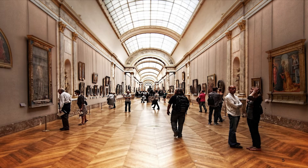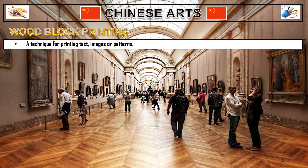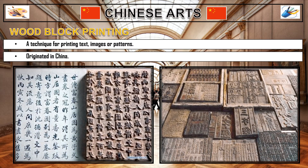Another type of Chinese art is what we call woodblock printing. This is a technique for printing text, images, or patterns. Remember that during the old times, printing was done manually. This woodblock printing originated in China. Here is a sample of woodblock printing — it is a technique for printing text, images, or patterns used widely throughout East Asia.